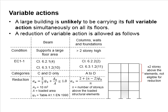Variable actions are normally difficult to predict due to their nature of being not consistent throughout the service life. They can be present or absent, and due to the movement of occupants or other aspects of the load, variable actions can fluctuate throughout the service life of the structure.